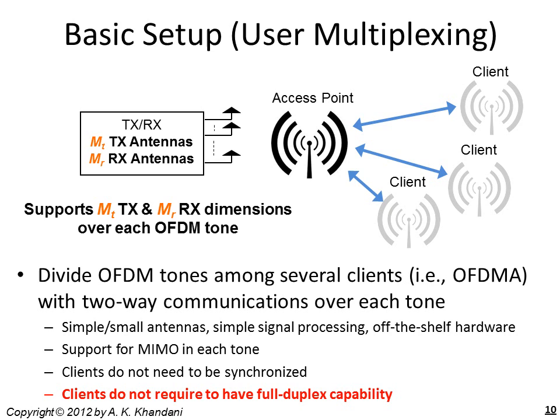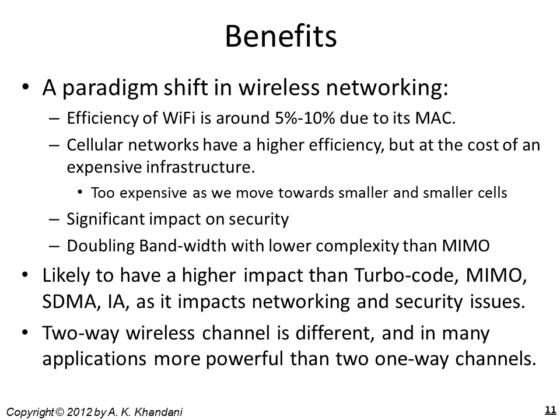We would also like to support asynchronous clients in the sense that new clients can join the network without prior coordination, without waiting too long, and without disturbing the operation of clients already in the network. I believe two-way wireless will result in major changes in the way wireless networking is done. Measurements of actual wireless usage on the UW campus show that efficiency for about 2000 clients and a few hundred access points is around 5 to 10%, due to the MAC layer of 802.11.